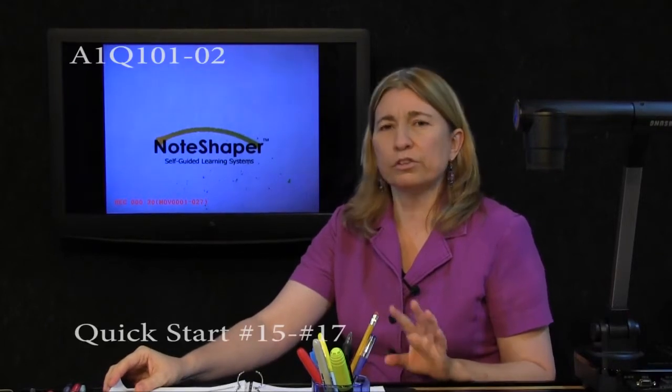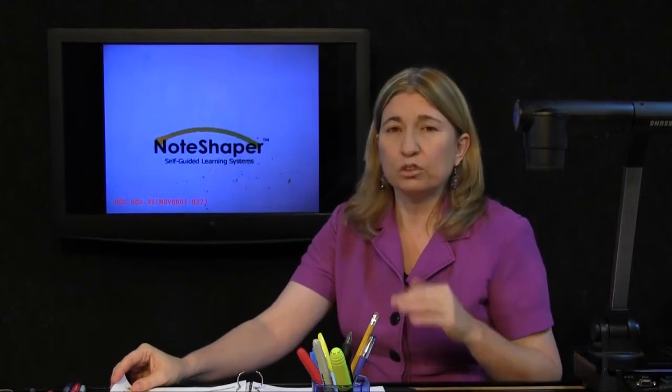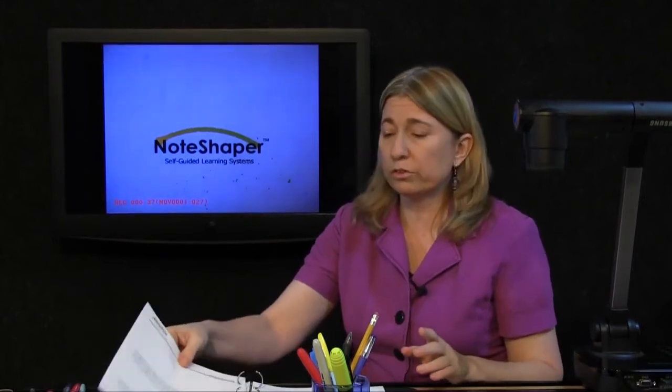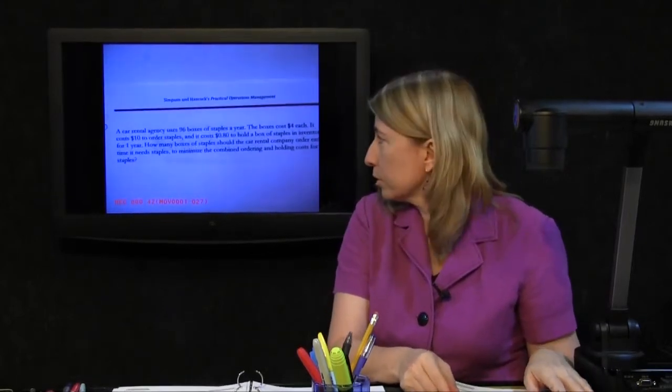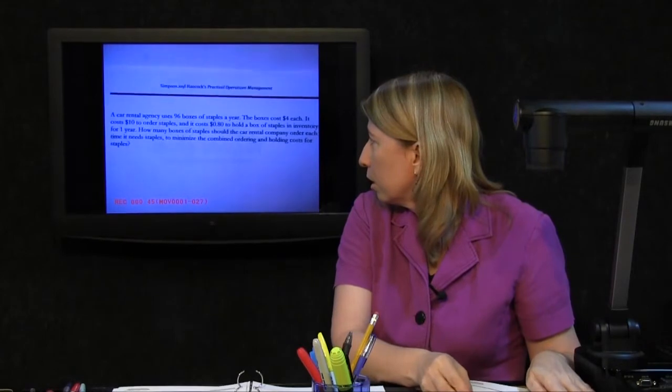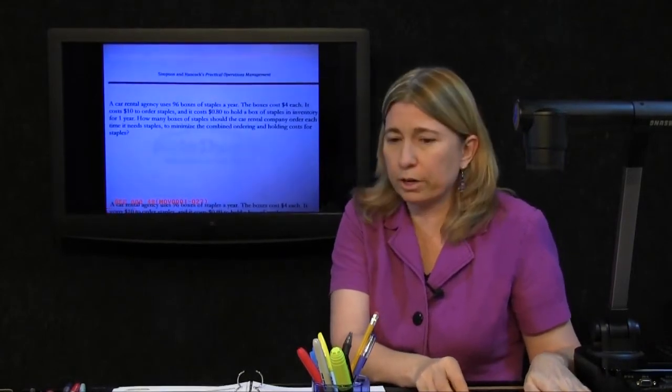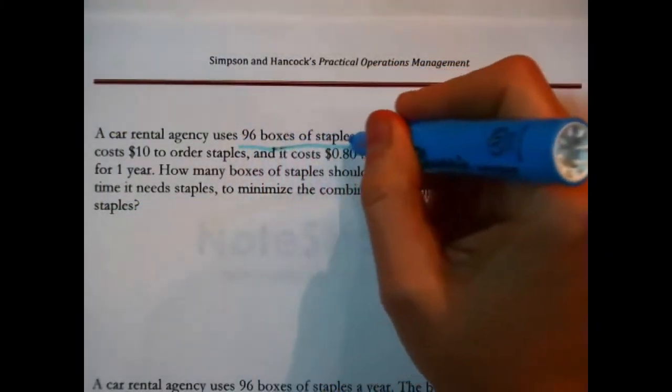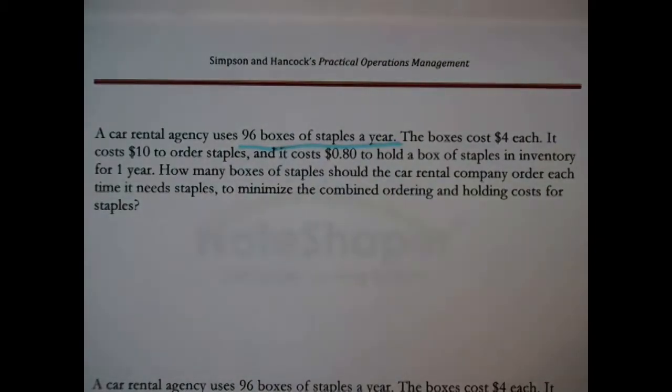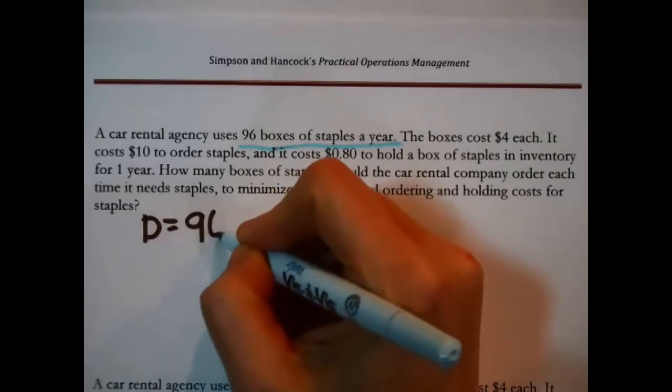With inventory models, one secret to success is finding the numbers you need to deploy inside the formulas. This question is a good example of that. A car rental agency uses 96 boxes of staples a year. I recognize that 96 a year is capital D, annual demand.